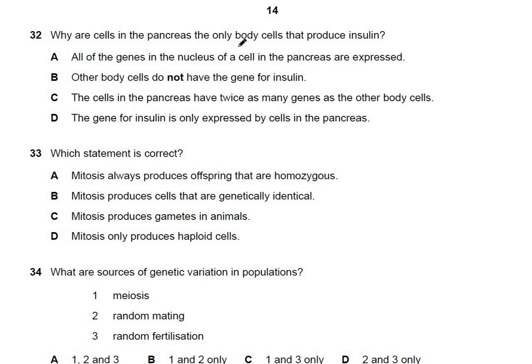Question 32: why are cells in the pancreas the only body cells that produce insulin? Insulin is a peptide hormone transcribed by genes; only the cells in the pancreas contain the active gene for insulin. Therefore only those cells can synthesize it. The answer is D.